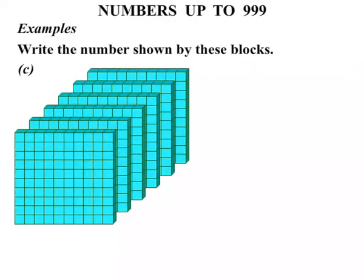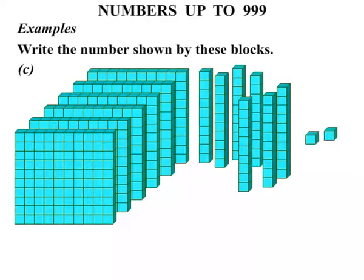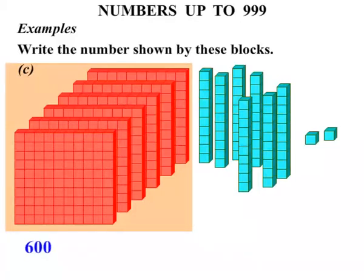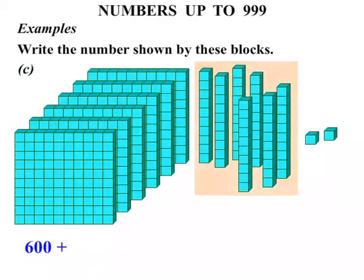Now let's consider part C. A number of flats there. A number of longs and some shorts. Well, let's count in hundreds. One hundred. Two hundred. Three hundred. Four hundred. Five hundred. Six hundred. Plus. Counting in tens. Ten. Twenty. Thirty. Forty. Fifty. Sixty. Seventy.